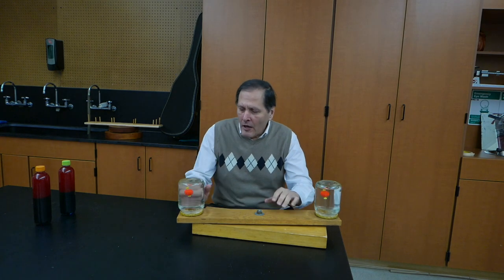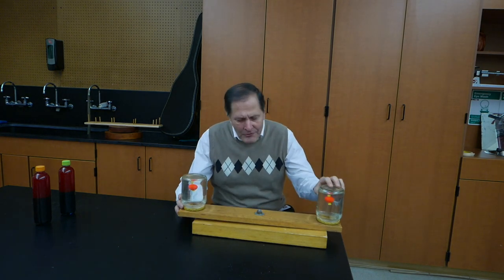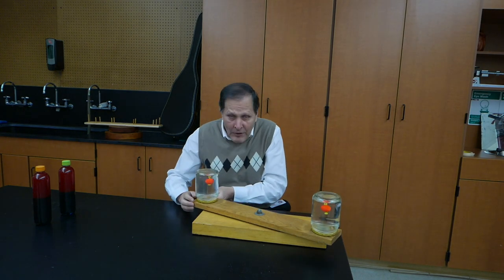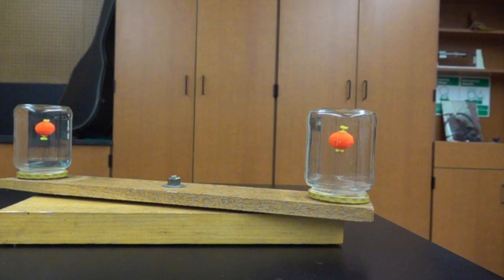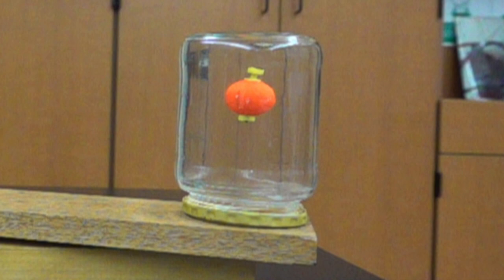Now with this arm free to rotate, the question is, what would happen inside the bottles if I were to give this thing a quick spin? Will the bobbers move to the inside, will they move to the outside, or will they stay right in the center? Let's give it a spin and see.